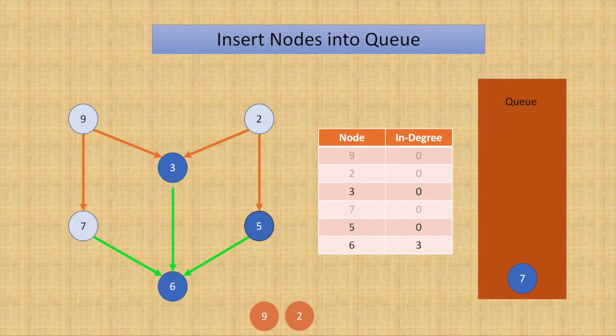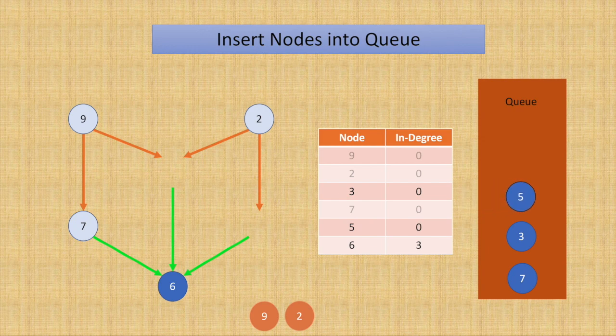So now if you see, the in-degree of node 3 and 5 both become 0, and hence we can again insert them into our queue. So we'll move node 3 into the queue and then node 5 into the queue. Or we could have done it either way, with 5 coming before 3, and that would also have been correct.